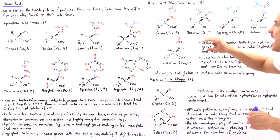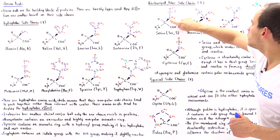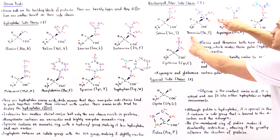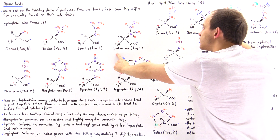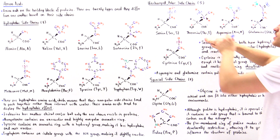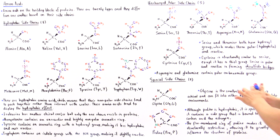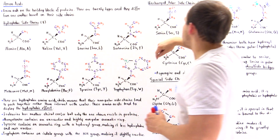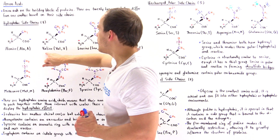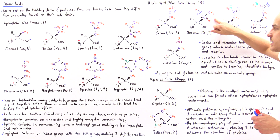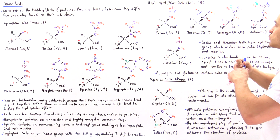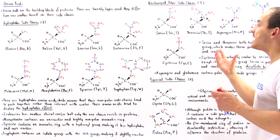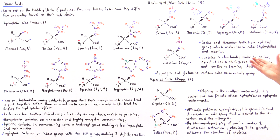Threonine differs from serine in that one of the H atoms on the beta carbon is replaced by a methyl group, making that carbon a second chiral carbon — just like isoleucine. This is also the only enantiomer of threonine found in our body's proteins. Serine is essentially like alanine with one H atom replaced by a hydroxyl group, and threonine is like valine with one methyl group replaced by a hydroxyl group. The electronegative oxygen creates a dipole moment, making these polar amino acids.